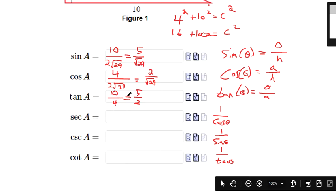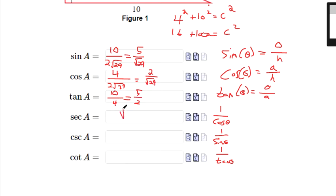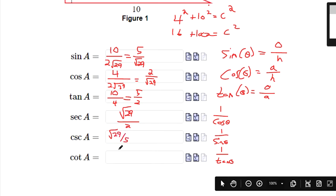So since secant and cosecant are reciprocals, I'm just going to flip cosine here. It's the square root of 29 over 2. Cosecant is the flipped version of sine. So that's the square root of 29 over 5. Cotangent is the flipped version of tangent. So it will be 2 over 5.